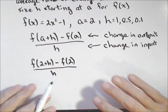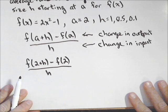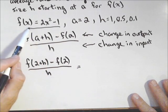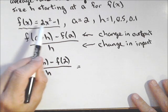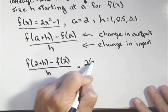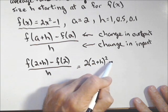So, we need f of 2 plus h, we need f of 2, and we can put this thing together. f of 2 plus h, that is our function with 2 plus h plugged in for our input. So, we have 2 times 2 plus h, the quantity squared, minus 1.